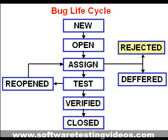If the developer feels that the bug is not genuine, he rejects the bug. Then the state of the bug is changed to rejected.